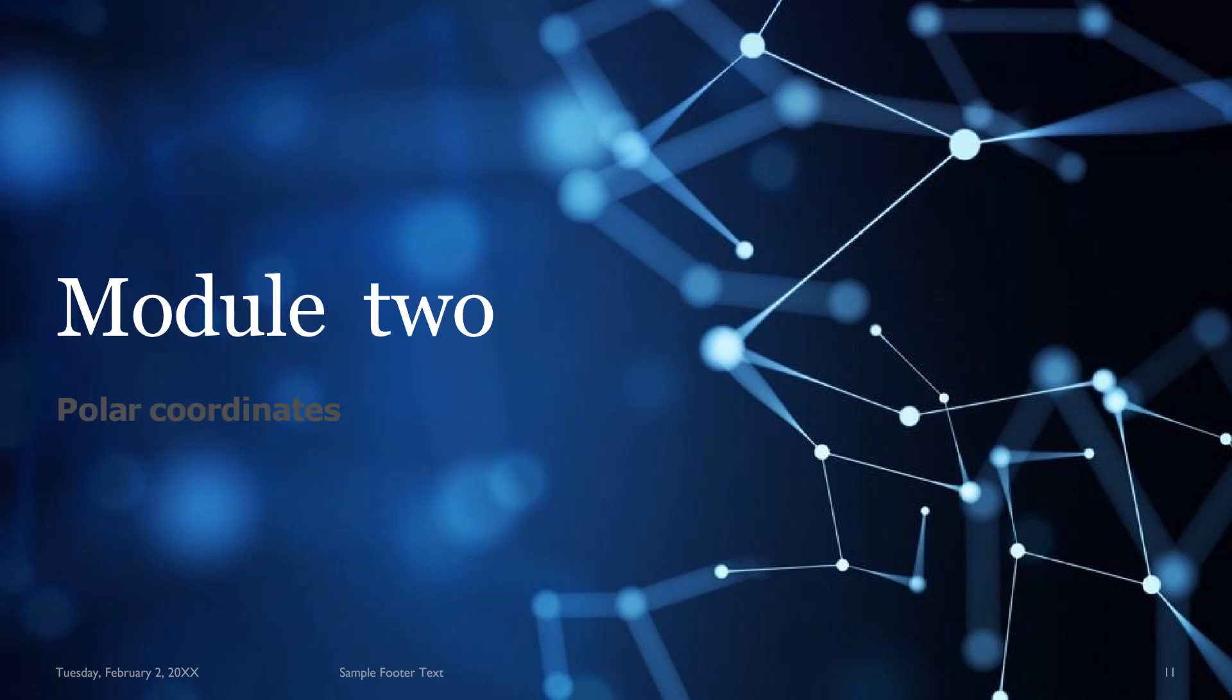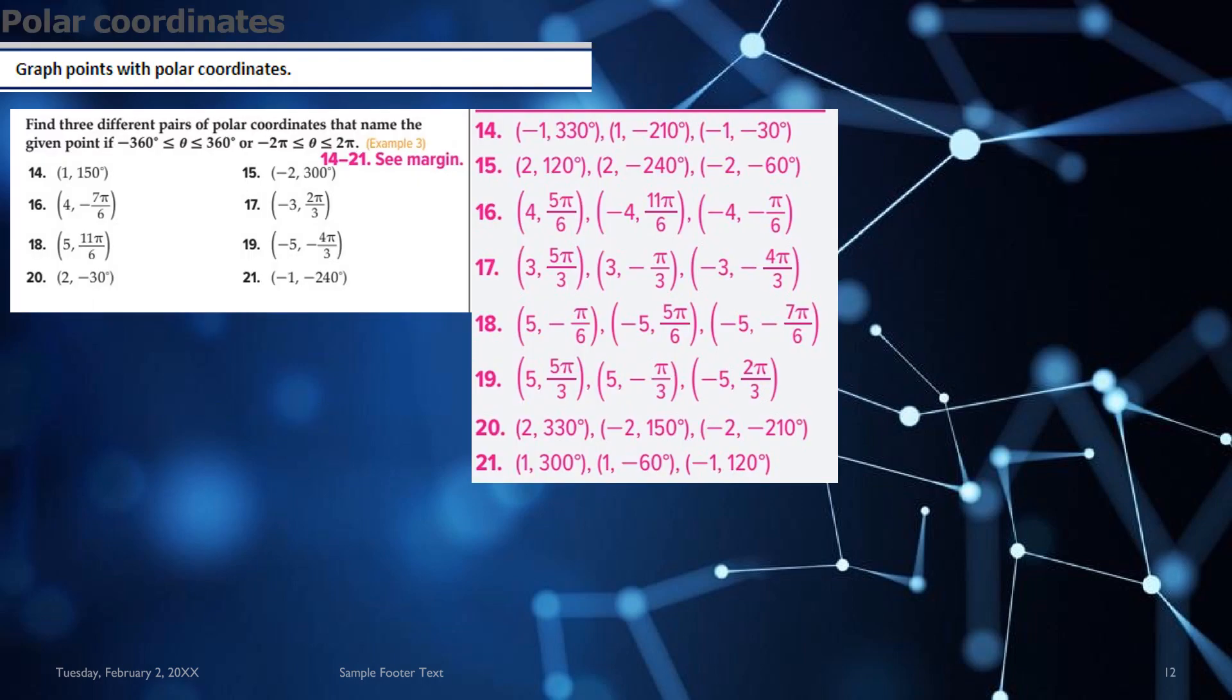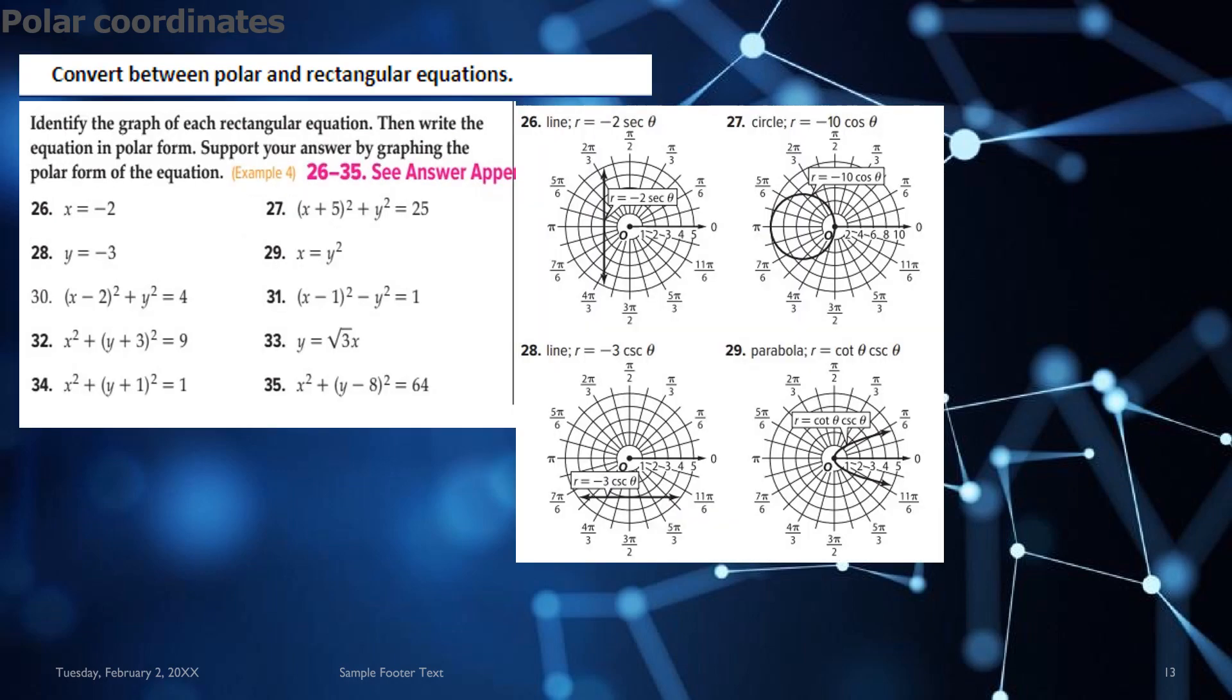And now we move on to module 2, polar coordinates. Here you have a question on graph points with polar coordinates, question 14 to 21. The detailed answer key is provided in pink on the right side. See the margin and get your answers.